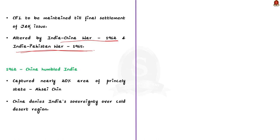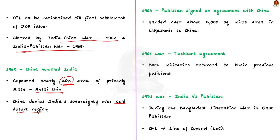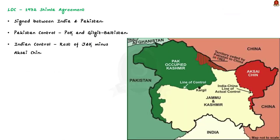Firstly, in 1962, China humbled India and captured nearly 20% of the princely state — the area captured was Aksai Chin. Note that China denies India's sovereignty over this cold desert region. Further, in the year 1963, Pakistan signed an agreement with China and handed over about 2,000 square miles of area in northern Kashmir to China. You can see the ceded part in the map shown here.